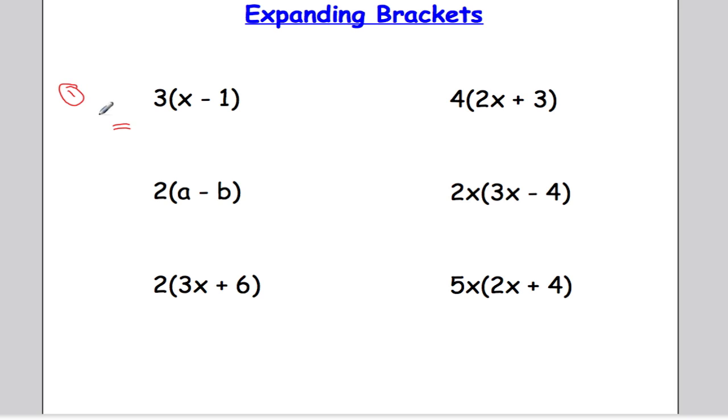Let's start with example 1 here. We've got 3 bracket x minus 1 and what that means is 3 multiplied by x multiplied by minus 1. So I'm going to take the 3, multiply it by the x and then multiply it by the negative 1. Well 3 times x is simply 3x and then 3 times negative 1 is negative 3. And that's our answer folks. Simple as that.